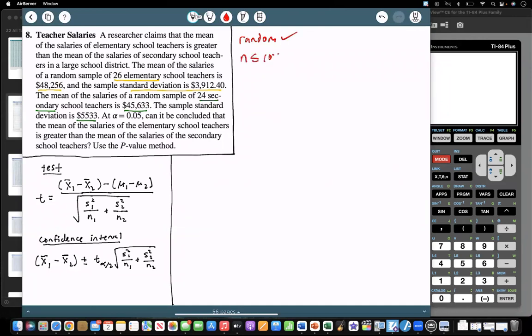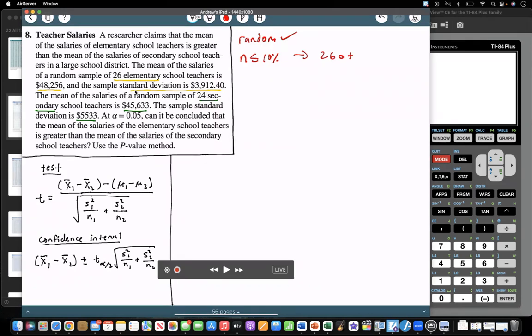Our samples need to be less than 10% of the population. So we're looking at a large school district here. If we have 26 here, if I multiply that by 10, that would be 260. So that's 10% of 260. So one assumption that we're going to be taking is that the school district has at least 260 elementary and 240 secondary school teachers. We're also assuming that the variable, in this case the salary, the salaries are normally distributed. So it doesn't mention that the variable is normally distributed, so those are two assumptions that we're going to be taking while doing this test.